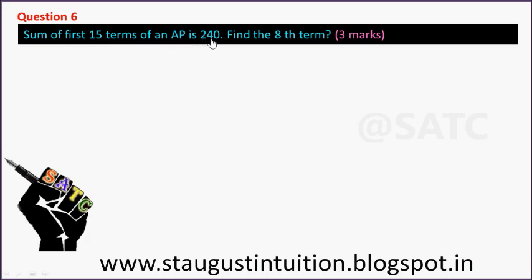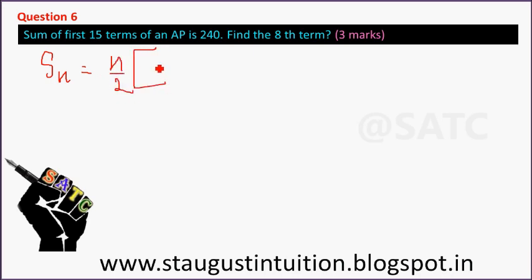Sum of 15 terms of an AP is 240. Find the 8th term. The formula is S equals N by 2 into 2A plus N minus 1 into D.